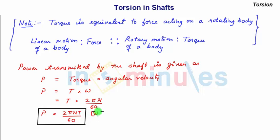So your power term becomes 2π NT by 60, and the unit of power we know is Watt. So in this, your n is speed of rotation of shaft in RPM, rotation per minute. So this power transmitted by shaft is used in machine or machine tool to carry out the work.